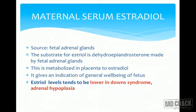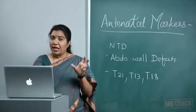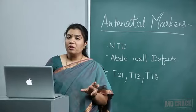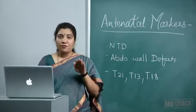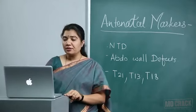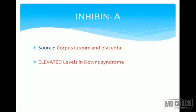The third marker is maternal serum estriol. Its source is the fetal adrenal glands, which produce dehydroepiandrosterone (DHEA) as substrate; this is metabolized in the placenta to estriol. It gives an indication of general fetal well-being. Estriol levels tend to be lower in Down syndrome and in adrenal hypoplasia, so it can be used to screen for trisomy 21.